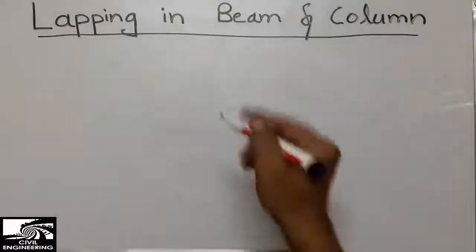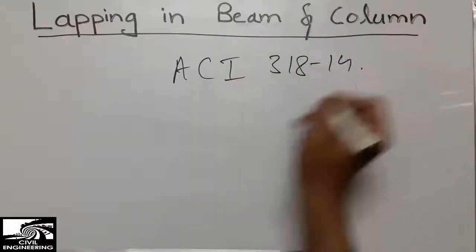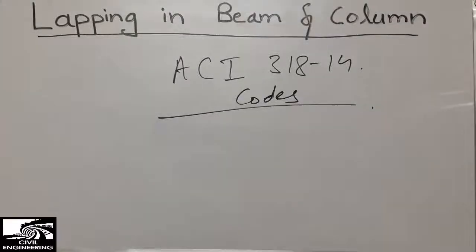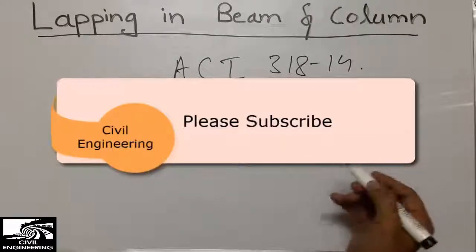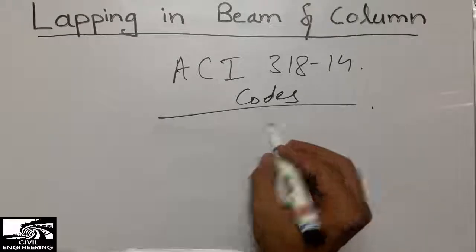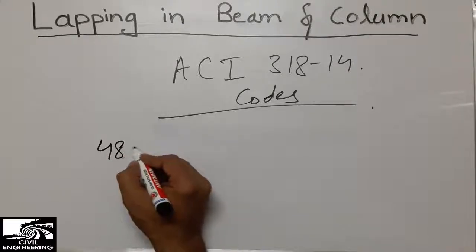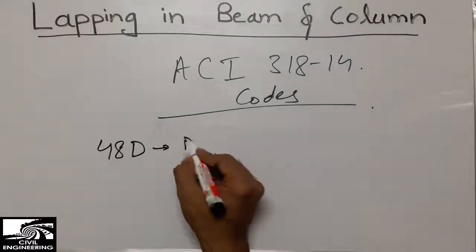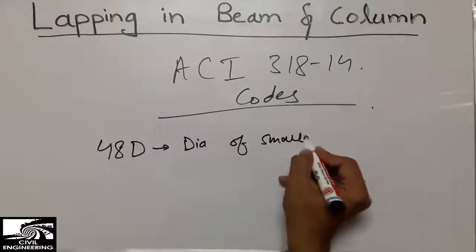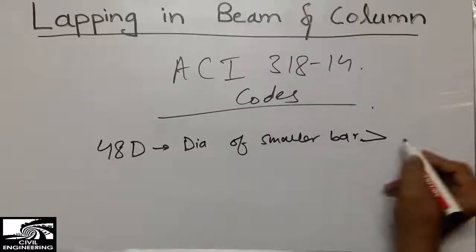ACI (American Concrete Institute), specifically ACI 318/314, provides codes for lapping length. For compression members — columns, pillars, and piers are all compression members — the lapping length is 48 times the diameter (48d), where d is the diameter of the smaller bar.